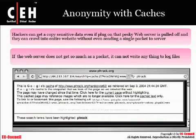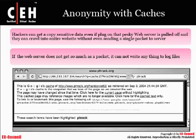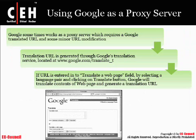Let's get started with some simple Google hacking basics. First, let's take a look at anonymity with caches. Hackers can get a copy of sensitive data without ever sending a packet to the actual server, just by getting information from a Google query. We can basically use Google as a proxy server — querying against Google gives us information about the website without exposing who we are to the actual target.